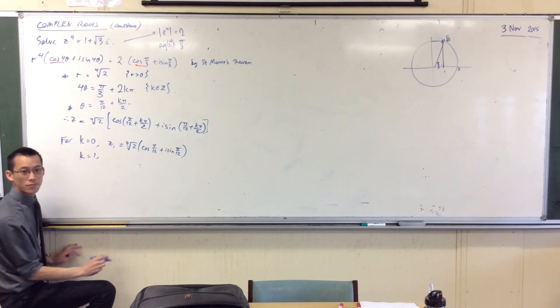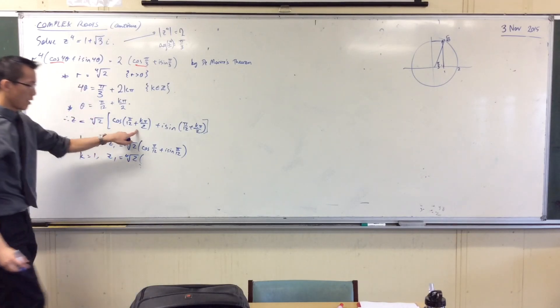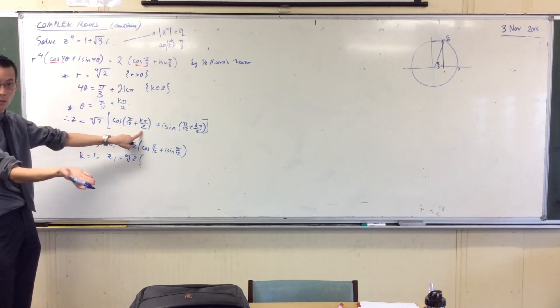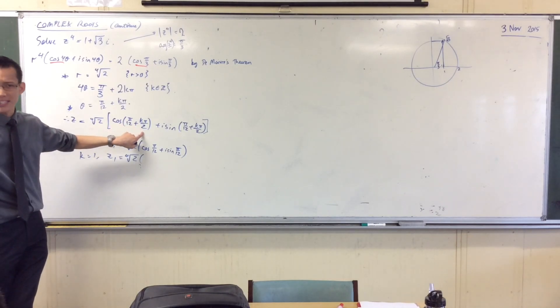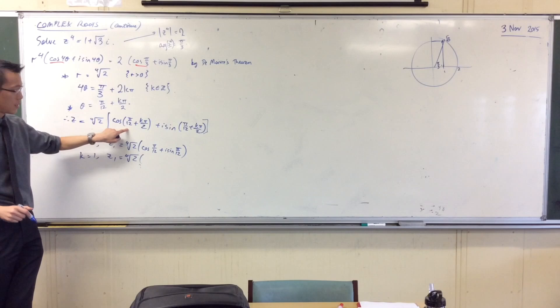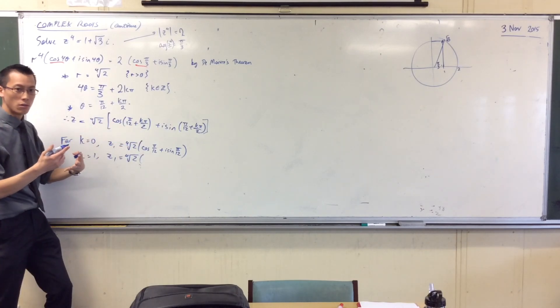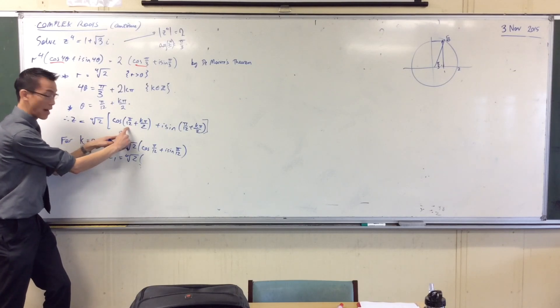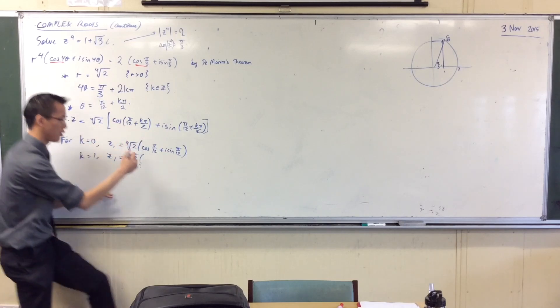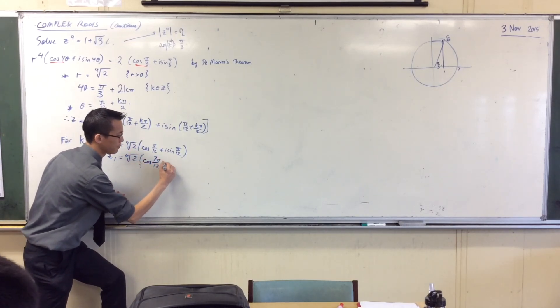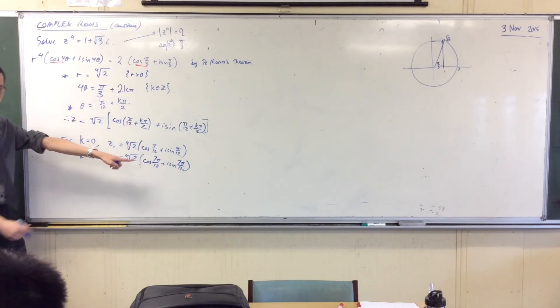Let me get the next one. k equals 1. Now as you're computing this, I want you to think, I'm going to have one lot of pi on 2, so I've gone one right angle around. Pi on 2 is 6 pi on 12. Do you agree with that? So when I put 1 pi on 12 here and 6 pi on 12 there, the sum will be, I'm adding, pi on 12 plus 6 pi on 12, which is 7 pi on 12. I've gone forward.